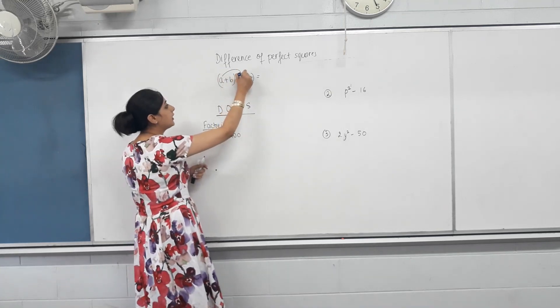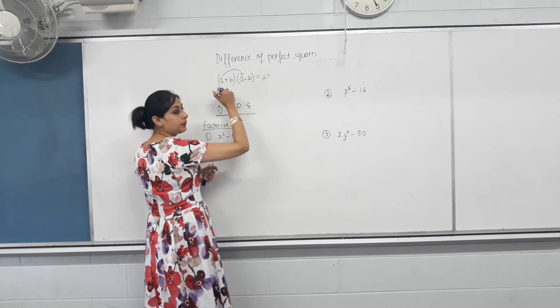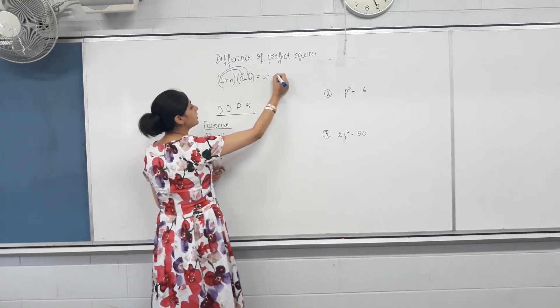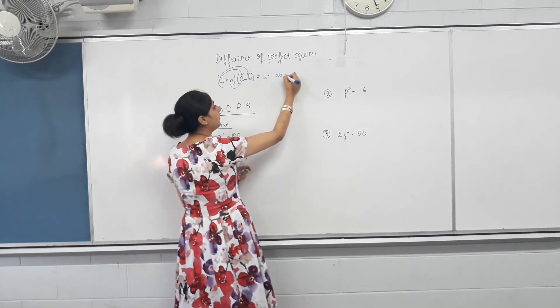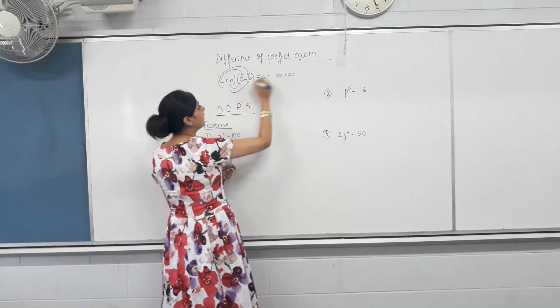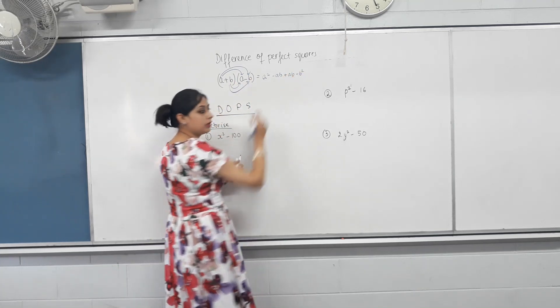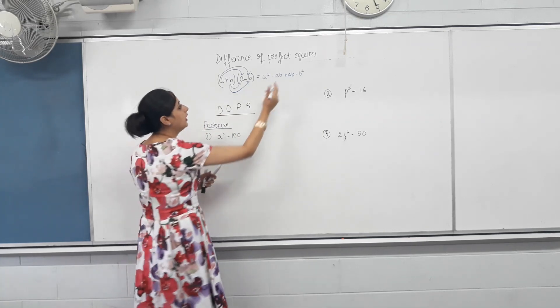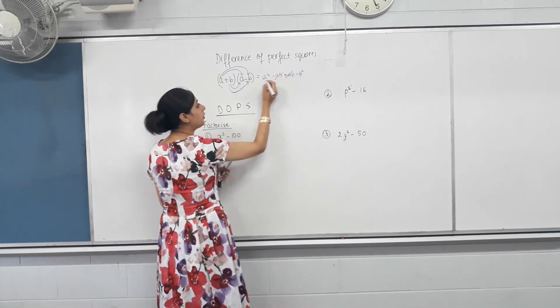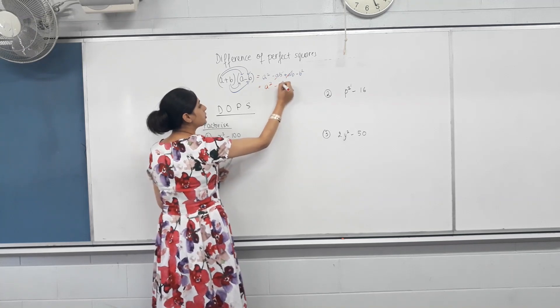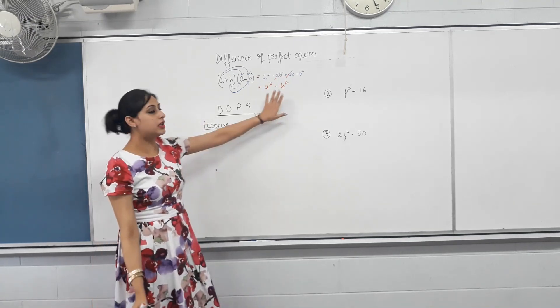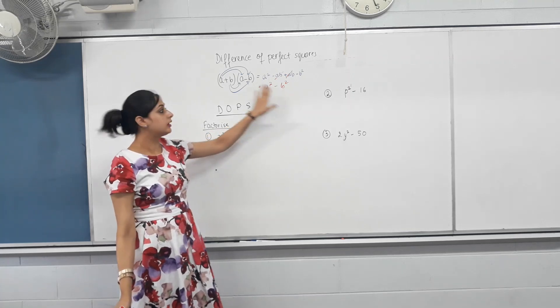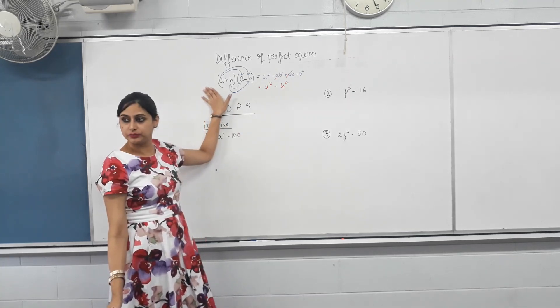So, I'm going to use FOIL to expand it. A times A is A squared. A times negative B is minus AB. B times A is plus AB or BA. B times negative B is negative B squared. Right? So, we have done FOIL. We're not spending time on it again. Plus AB minus AB is zero. So, I'm left with A squared minus B squared. Is that right? So, this is the expanded form. So, this is the factorized form. Right?